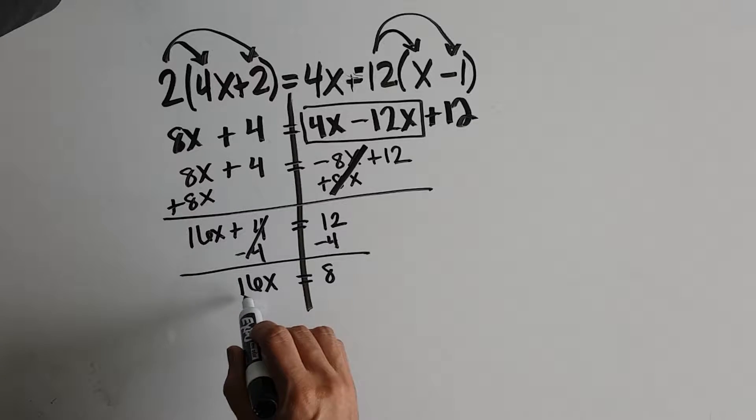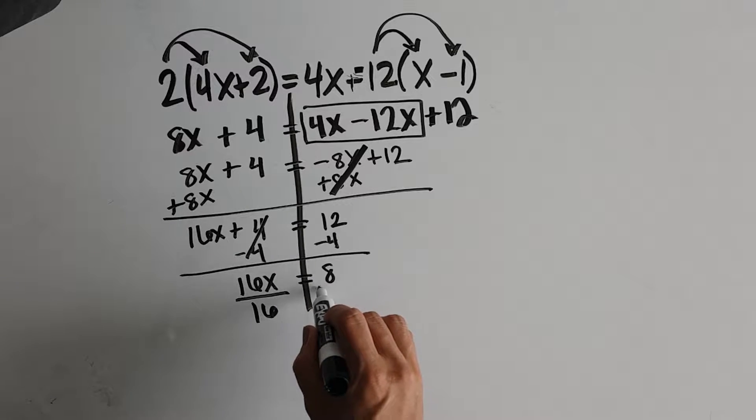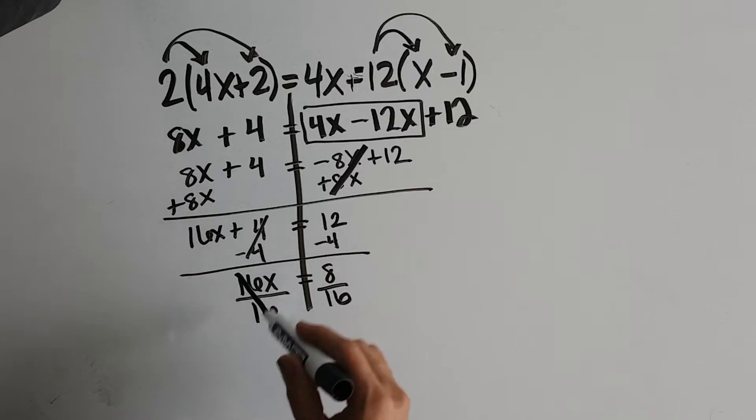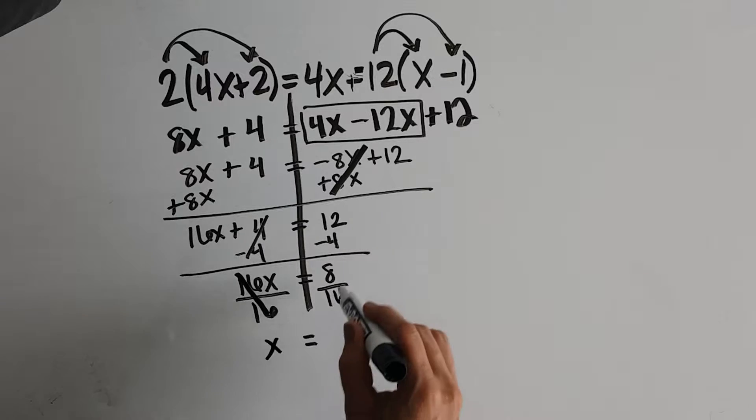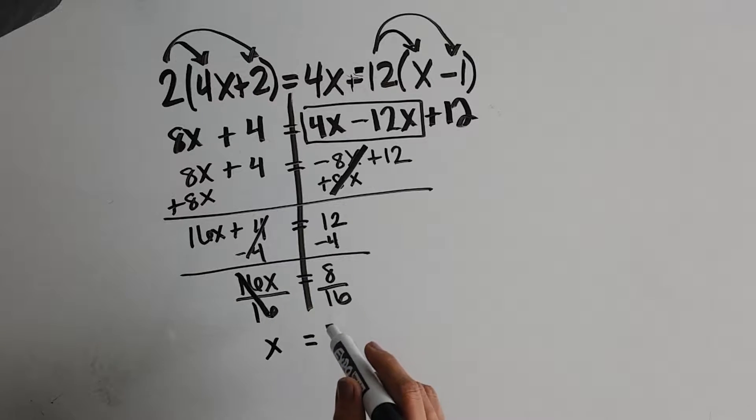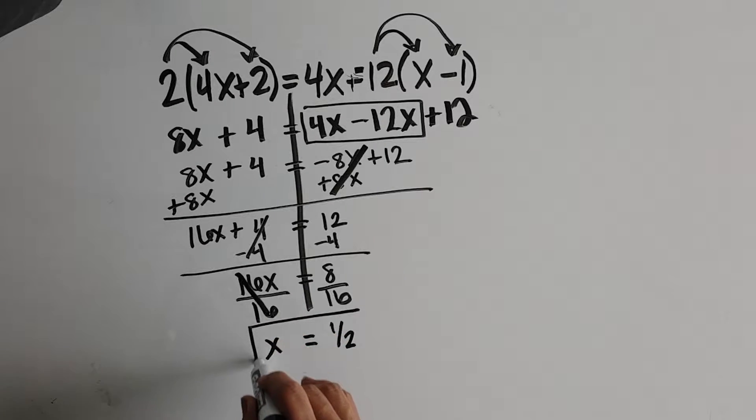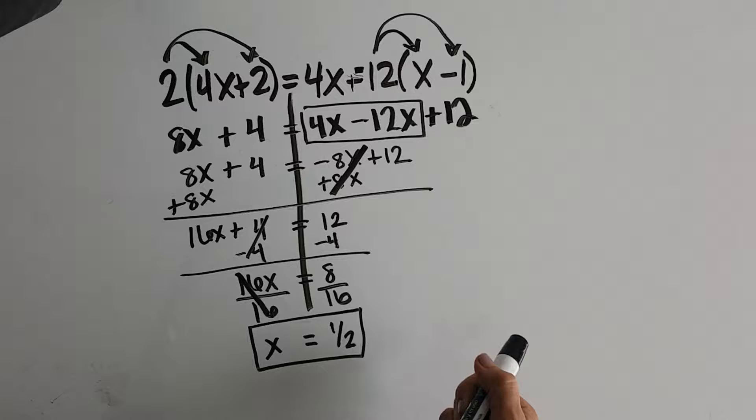16 times x. To undo that, we divide both sides by 16. 16x over 16 is 1x. 8 over 16 is not 2. It is 1 half. So again, we've isolated our variable. So that would be our final answer.